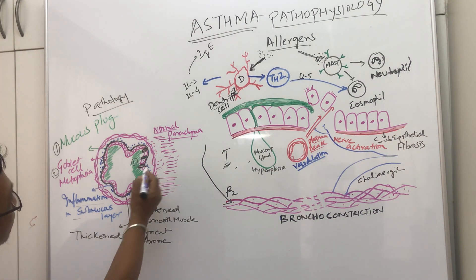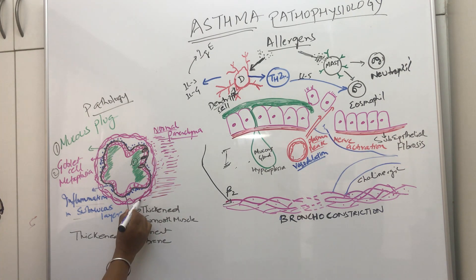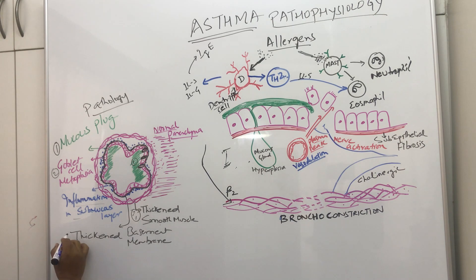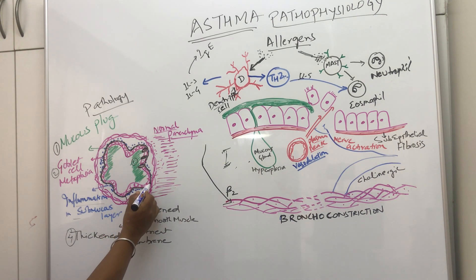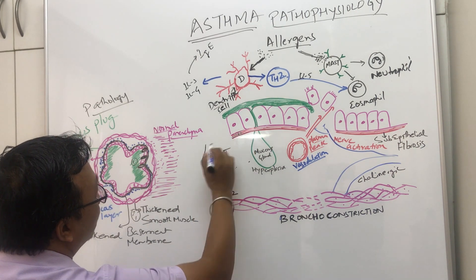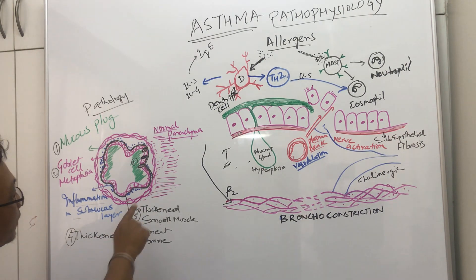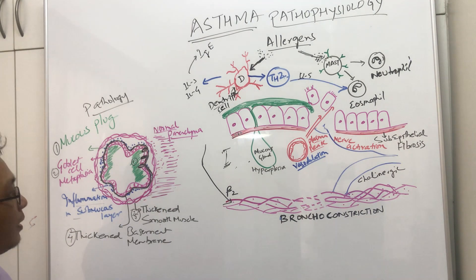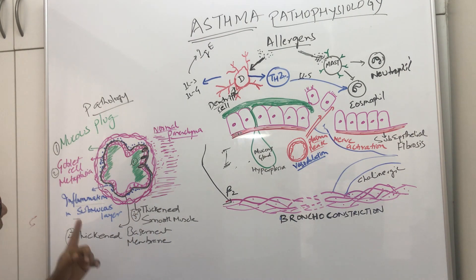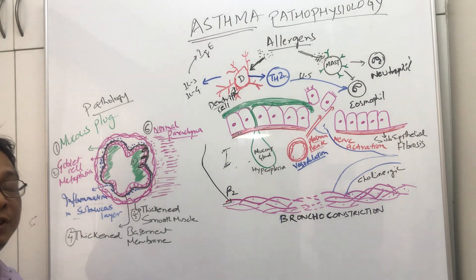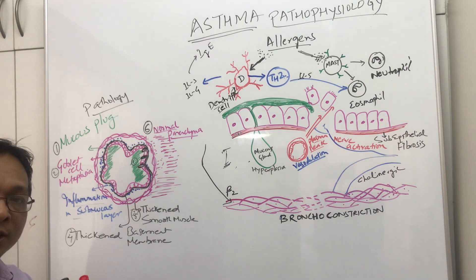Number four, going from inside, there will be thickened smooth muscle. Number five — actually number four — is the thickened basement membrane. This basement membrane is quite thickened because of sub-epithelial fibrosis. Number five is the thickened smooth muscle, which becomes thick and as a result there is constriction. Number six is always normal parenchyma, which differentiates regular asthma from COPD cases, because the parenchyma is not involved in asthma.